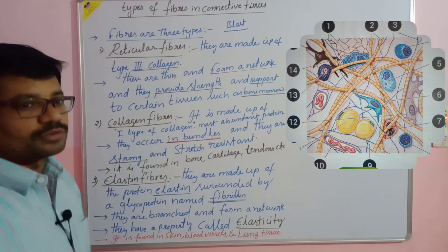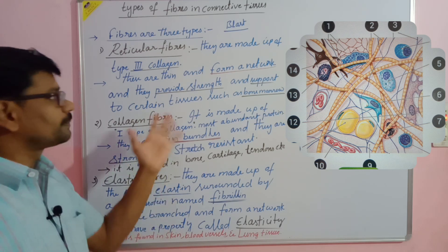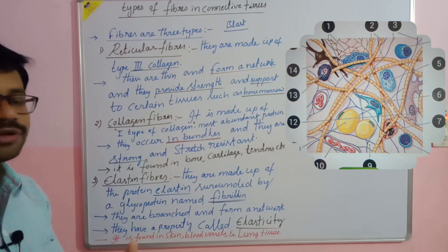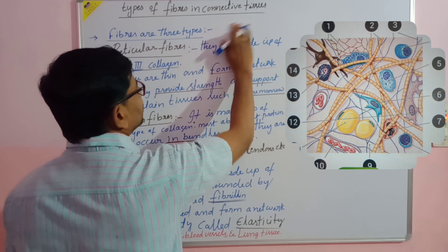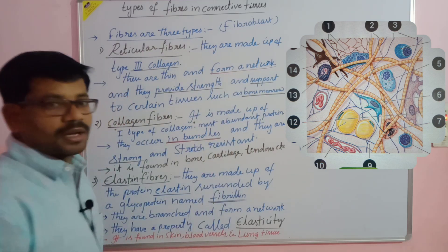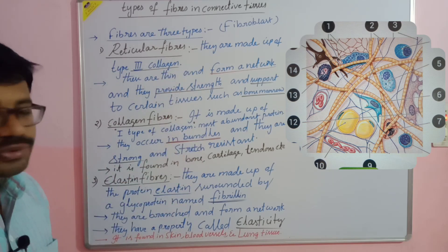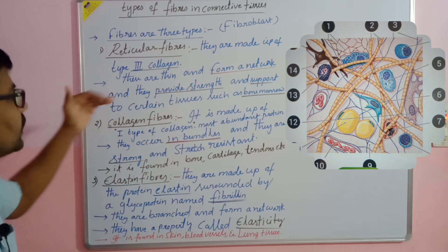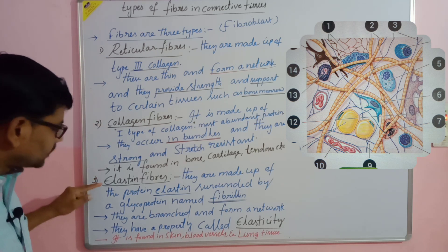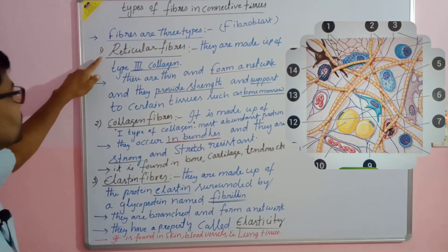The fibers are connective tissue components and are all made up of proteins. These fibers also originate from embryonic mesoderm cells called fibroblasts — the active, immature cells which form the fibers. In the connective tissue there are three types of fibers: reticular fibers, collagen fibers, and elastin fibers.